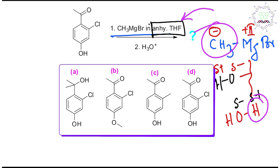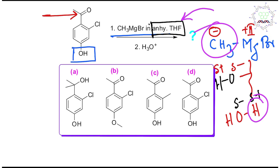The three reactive sites are: first, a carbonyl group — Grignard reagent can do nucleophilic addition on carbonyls, and since this is a ketone, it could give a tertiary alcohol. Second, there is a carbon-chlorine bond, but this is an aromatic C-Cl bond, which is difficult to break, and no palladium catalyst is given — so please ignore this option. Third, there is an OH group.